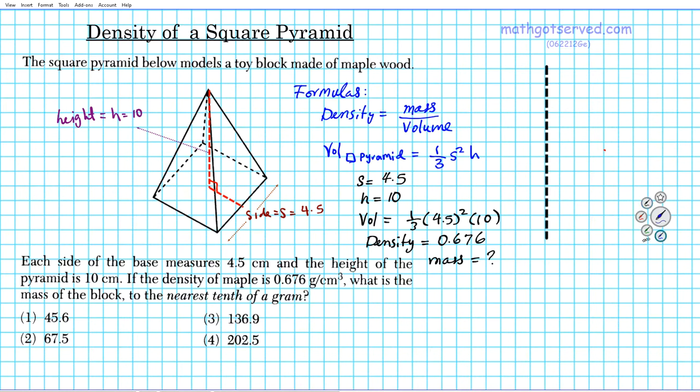So let's reintroduce the formula. Density is equal to mass over volume. And then we're going to populate the known and unknown. The knowns are the density and volume. So the density is 0.676 equals the mass, which we do not know, divided by the volume expression which is 1/3 times 4.5 squared times 10. You can work it out if you want. You don't have to right now.